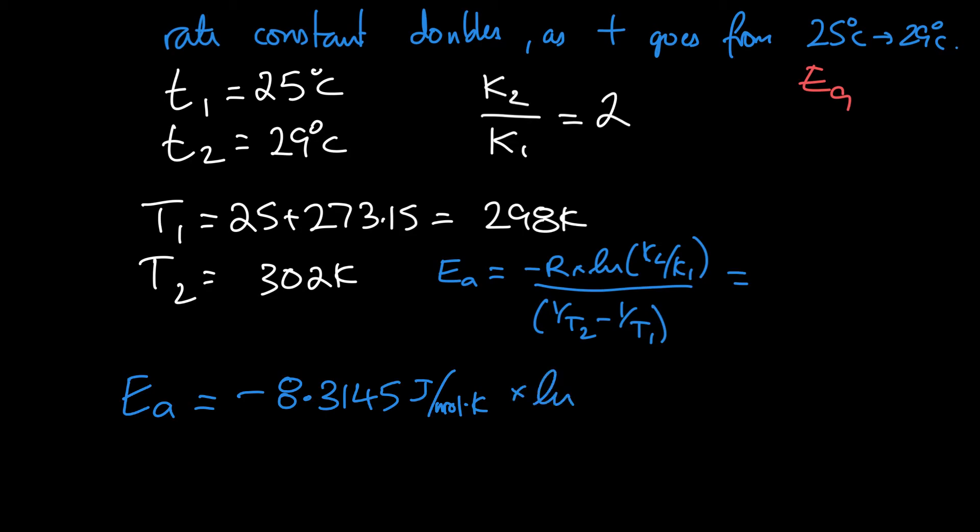And again, the natural logarithm of that ratio, we set that ratio is 2, so we can just put the number 2 in there. And then on the bottom, it's going to be kind of a pain to enter in our calculator. We've got 1 over T2, so that's 1 over 302 Kelvin minus 1 over 298 Kelvin.